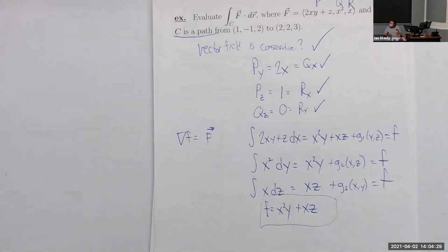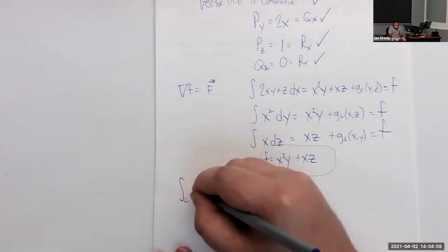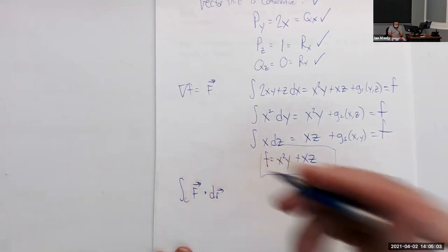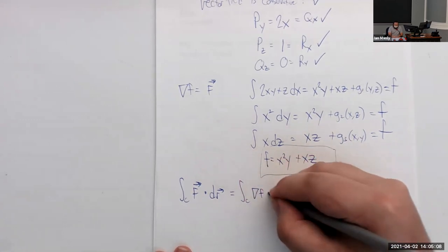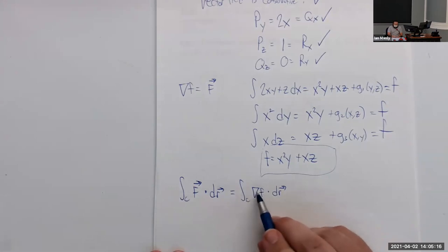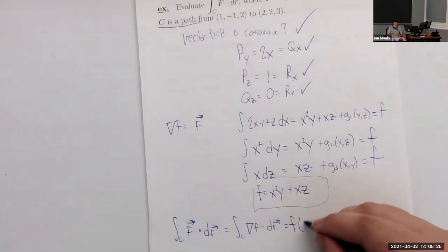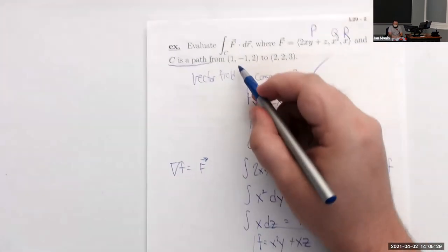Now we use the fundamental theorem of line integrals. Our goal is to evaluate the integral of f dot dr, which we can rewrite as the integral of the gradient of a potential function dot dr. Since we have an integral of something like a derivative, they cancel out and we're left with f evaluated at the final point (2, 2, 3) minus f evaluated at the initial point (1, −1, 2).